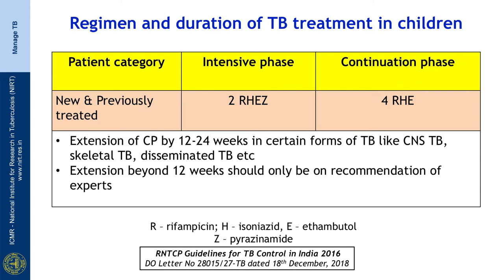For a new case, the recommended intensive phase uses 4 drugs — rifampicin, INH, ethambutol, and pyrazinamide — for 2 months. The continuation phase uses rifampicin, INH, and ethambutol for 4 months in most situations. Exceptions include extra-pulmonary TB involving the CNS or osteoarticular disease, where treatment is extended up to 12 months. Six months is standard for most pulmonary and extra-pulmonary TB such as skin or lymph node involvement.